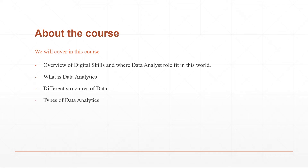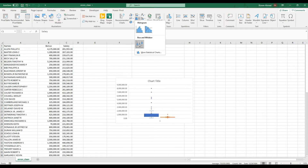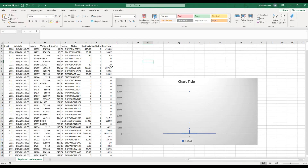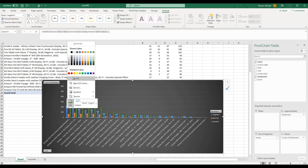We will see different data analytics types and a structured process for solving data analytics problems, answering questions, and performing analytics. At the end, we will look at various popular tools to perform analytics, along with real-world examples — such as finding outliers in your dataset and why it is important for auditors to use this approach, as well as sentiment analysis: finding emotions and sentiments in your customer feedbacks.